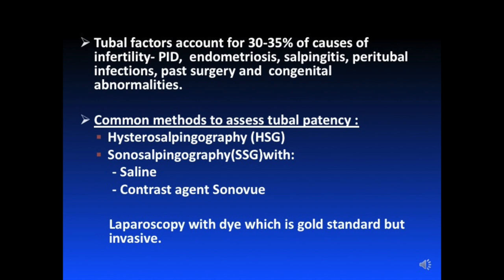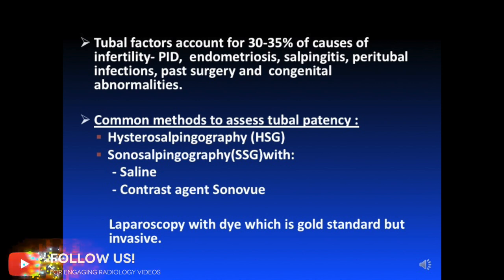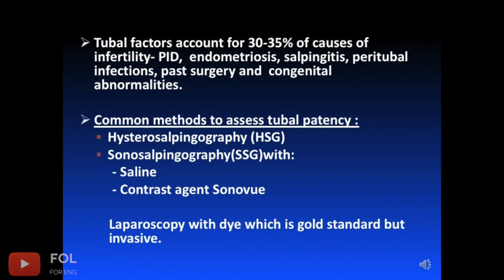The common methods used to assess tubal patency are hysterosalpingography, which is x-ray based and uses iodinated contrast medium with its known side effects, sonosalpingography using saline and the newer contrast agent Sonovue using micro bubbles, and laparoscopy with dye, which is the gold standard but is invasive.